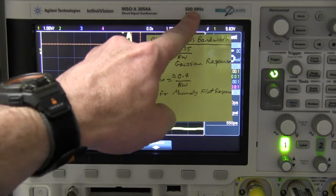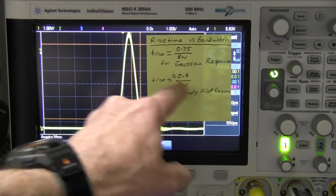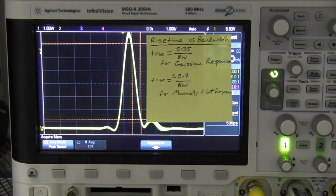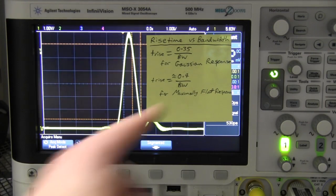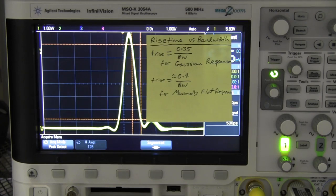In the case of this 500 megahertz bandwidth, using the formula of 0.4, we can calculate the rise time in theory of this oscilloscope is going to be 0.4 divided by 500 megahertz, that's 800 picoseconds.